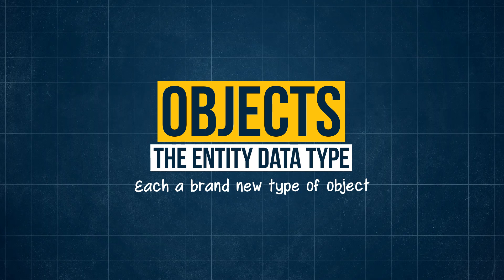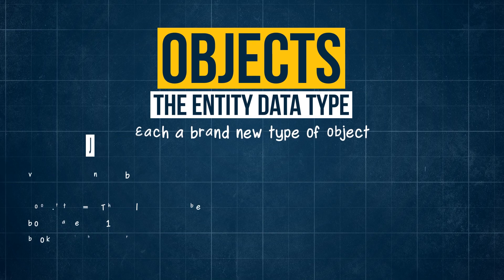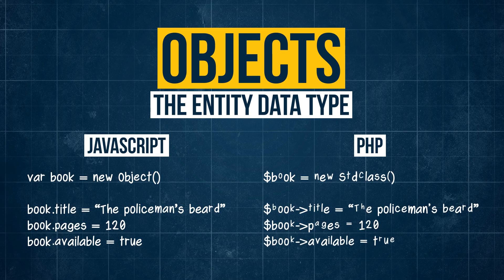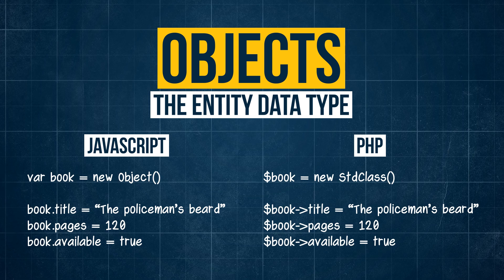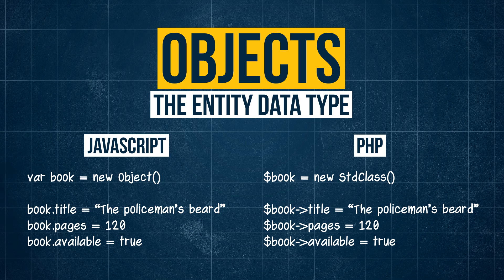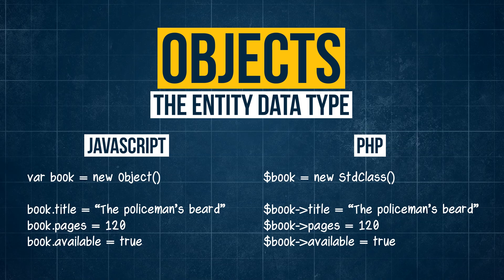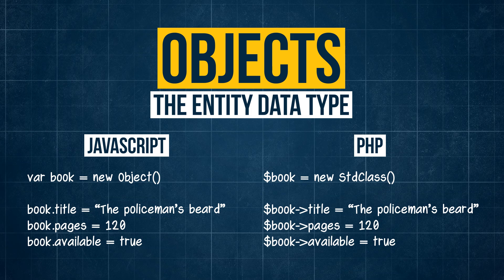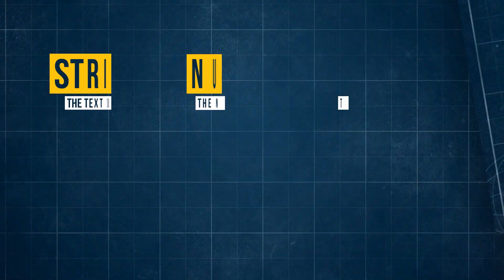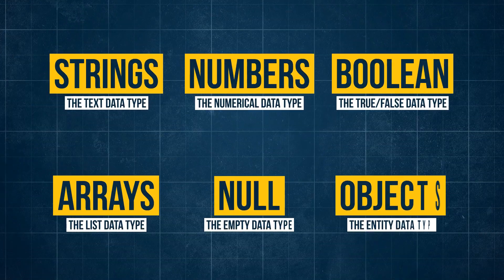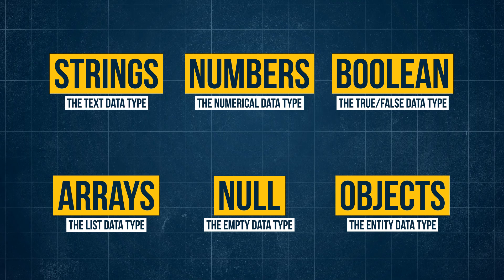Objects can have their own properties that have their own values. Objects typically need to be declared as such, and depending on the language have their own way to define a new property and set a value, as you can see here. So that's a quick breakdown of the most common data types in programming, how each is set and what makes each different.